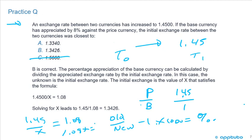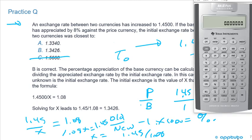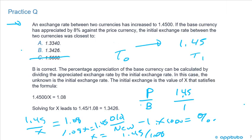So X is going to equal 1.45 divided by 1.08. And if I just bring up the calculator, 1.45 divided by 1.08, and that's going to be 1.342593. And that's closest to B. So B is correct. The percentage appreciation of the base currency can be calculated by dividing the appreciated exchange rate by the initial exchange rate. In this case, the unknown is the initial, so this is classic CFA, three variables, given two, calculate the third. And so the initial exchange rate is the value of X that satisfies the formula, 1.45 over X equals 1.08. And that's the last slide for this LOS. Thank you.